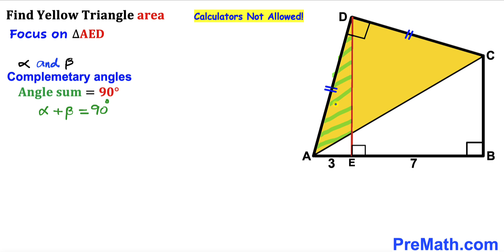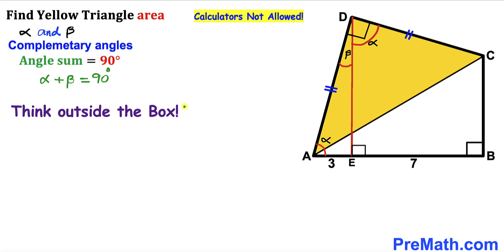In right triangle AED, let's assume this angle is alpha. We know this is the 90-degree angle, so therefore this angle has to be beta. We can see that the whole angle here is 90 degrees and this portion is beta, so the remaining angle is alpha. Now we are going to think outside the box and draw some auxiliary lines.